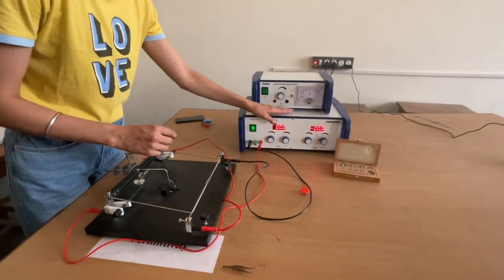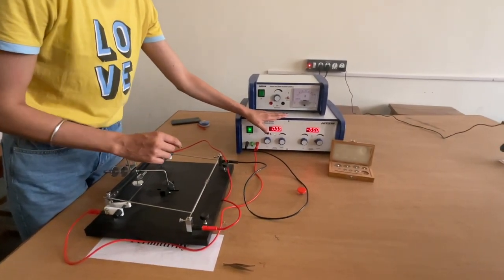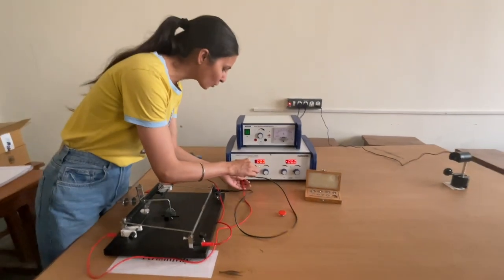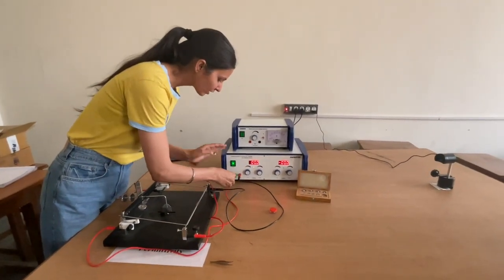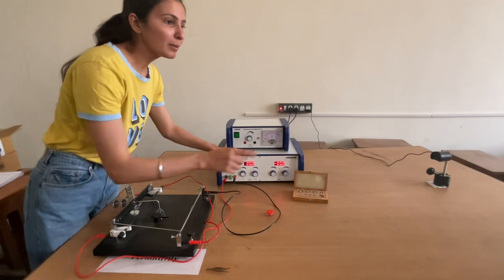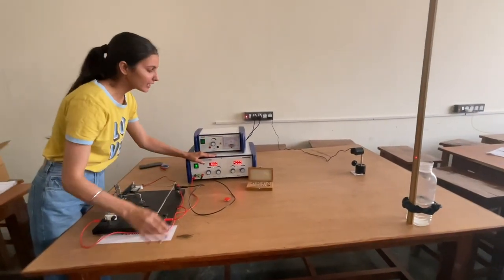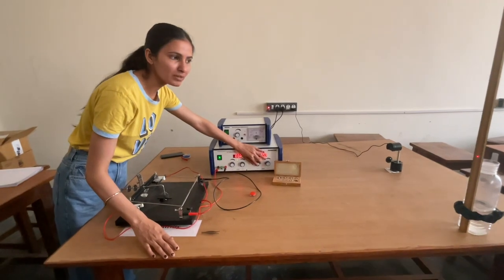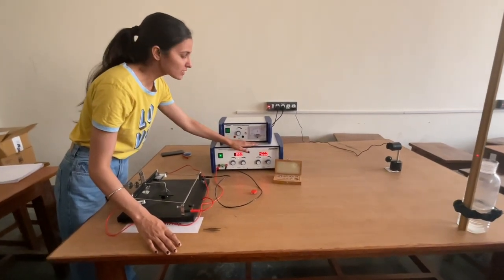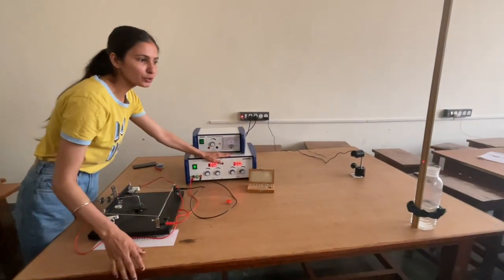Now, the current I1 is for forward bias. What do we do with reverse bias? We will interchange these two connections. Then, the point is disturbed. Then, the current will be adjusted to reach the equilibrium position again.